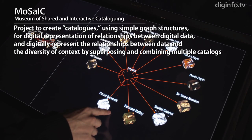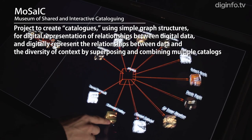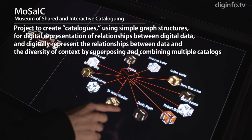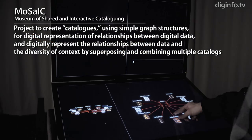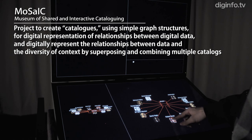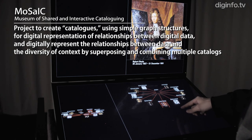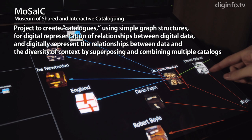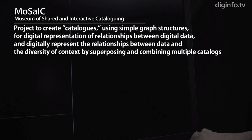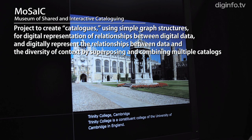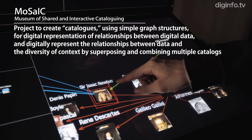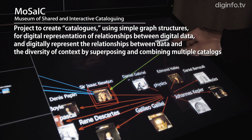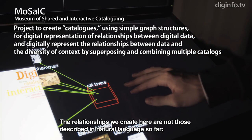Also, in the Mosaic Project at the DMC Research Center, which utilizes Keio University's all-around capabilities, the Kaneko Lab is creating catalogues using simple graph structures for digital representation of relationships between digital data. By superimposing and combining multiple catalogues, the aim is to digitally represent the relationships between data and the diversity of context.